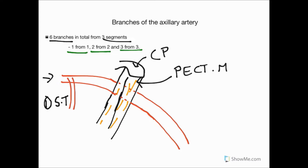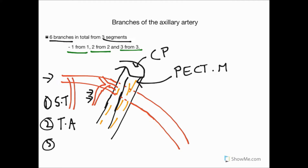Coming from the second segment, originating on the medial side from underneath pectoralis minor, is a small stubby branch called the thoracoacromial artery. It gives off a number of branches, and the one we're interested in is the pectoral branch of the thoracoacromial artery — it's the pectoral branch specifically that supplies the breast. The thoracoacromial artery itself is short and stubby and comes from the anterior surface of the second segment.